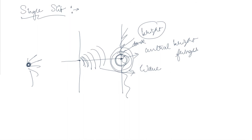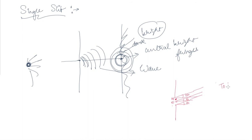Now for the mathematical derivation from the single slit experiment: consider a single slit with points m and n, where from each point of the slit there is a source. From the center, if light travels at angle theta, and from another point also at angle theta, because of these two sources there will be interference meeting at point p.